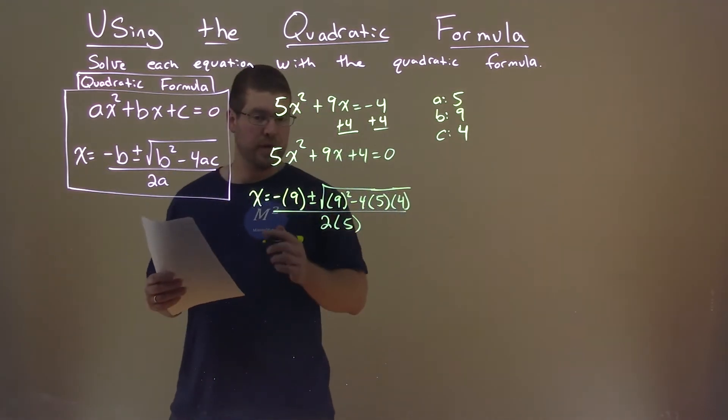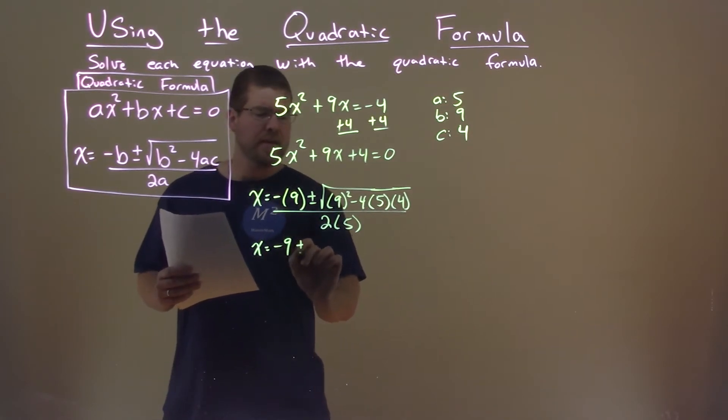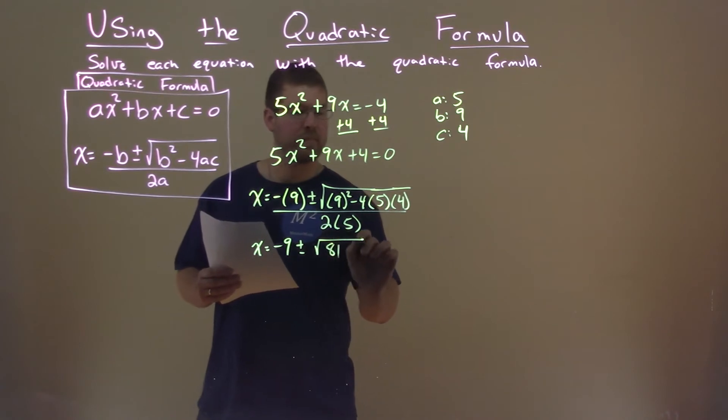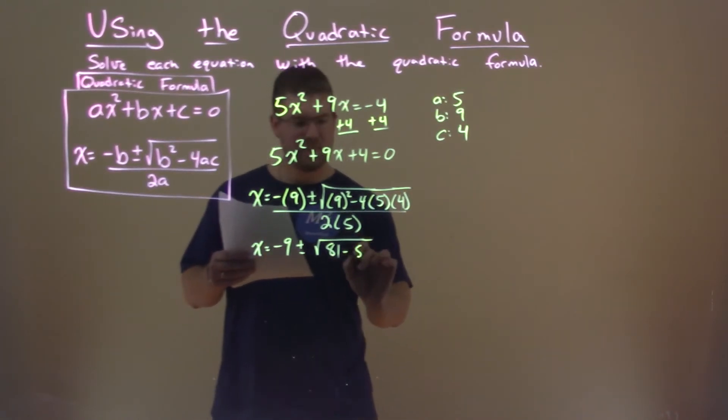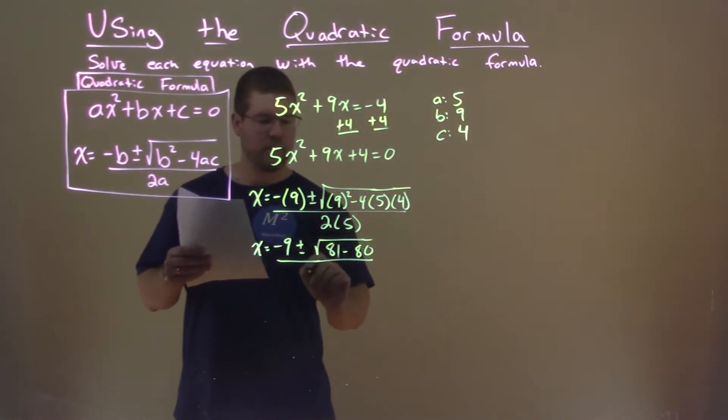So now let's simplify. x equals negative 9, plus or minus... 9 squared is 81, and 4 times 5 times 4 is 80, all over 2 times 5, which is 10.